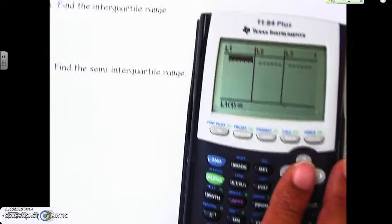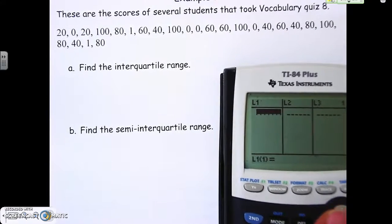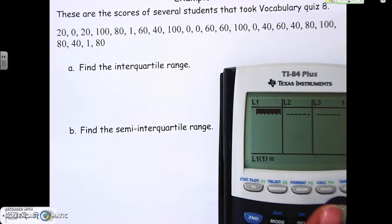We're going to put all these numbers into L1, from the very first 20 to the very last 80 on the second row. Be careful that you have all the numbers in place, because if they're not there, that means it's going to throw off your answer completely, and when we start doing our box and whisker plots, that's going to throw everything off too.